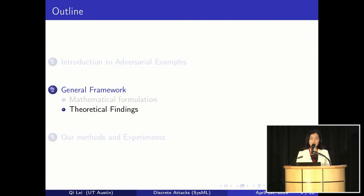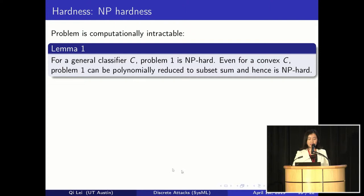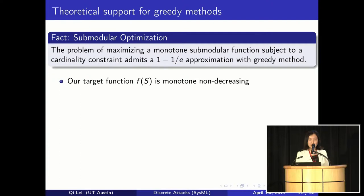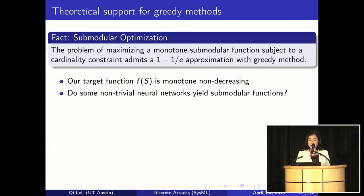With this formulation, we can derive some theoretical results. The first is that the problem is NP-hard — even for some convex classifiers, we can find instances where this problem can be polynomially reduced to a subset sum problem, and it is hence NP-hard. Secondly, this formulation — maximizing a set function over a cardinality constraint — reminds us of the famous result that maximizing a monotone submodular function subject to a cardinality constraint gives a good approximation with a greedy method. We can show that for any classifier, our target function is monotone non-decreasing. The question is: do there exist non-trivial neural networks that yield submodular functions?